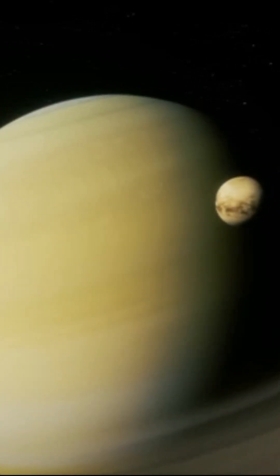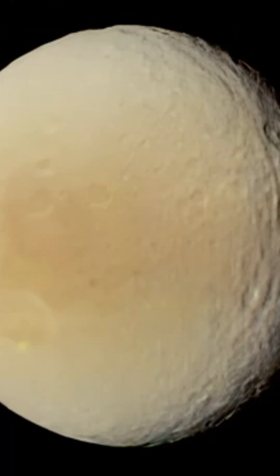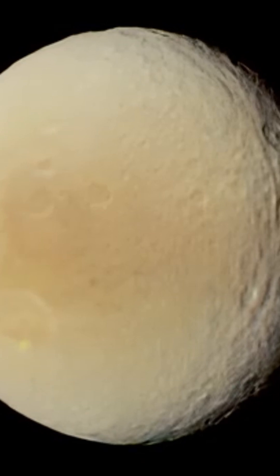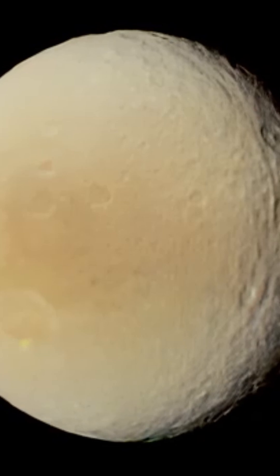During the flyby of Tethys, photos taken by Voyager 1 reveal a huge stripe down the side of the satellite. It's a canyon, 2,000 kilometers or 1,300 miles long by 100 kilometers or 60 miles wide.